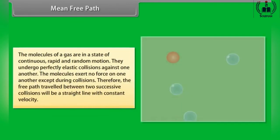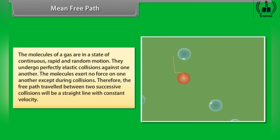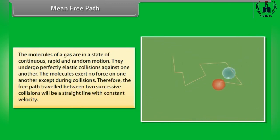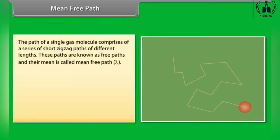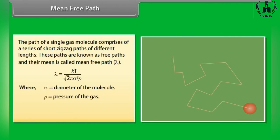Mean Free Path. The molecules of a gas are in a state of continuous, rapid and random motion. They undergo perfectly elastic collisions against one another, and exert no force on one another except during collisions. Therefore, the free path travelled between two successive collisions is a straight line with constant velocity. The path of a single gas molecule comprises a series of short zigzag paths of different lengths, known as free paths, and their mean is called the mean free path. λ = kT / (√2 · π · σ² · P), where σ is the diameter of the molecule, P is the pressure, T is the temperature, and k is Boltzmann's constant.